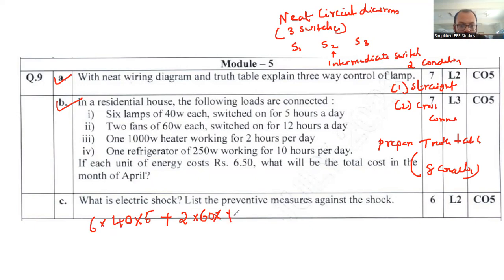Two fans of 60 watts for 12 hours, plus one thousand watt heater for 2 hours per day, plus one refrigerator with 250 watt rating for 10 hours.